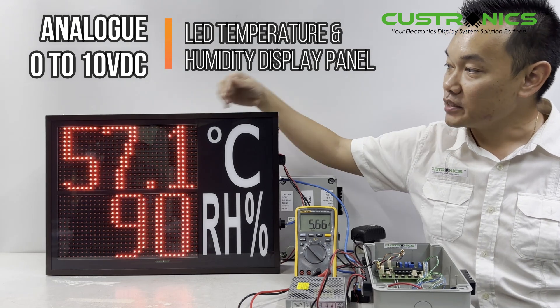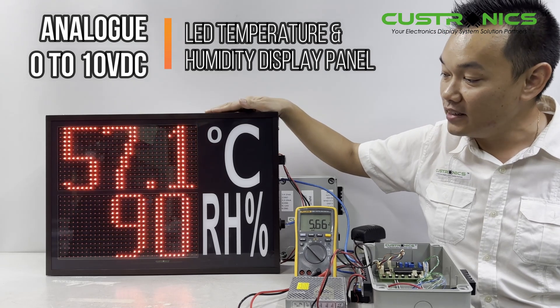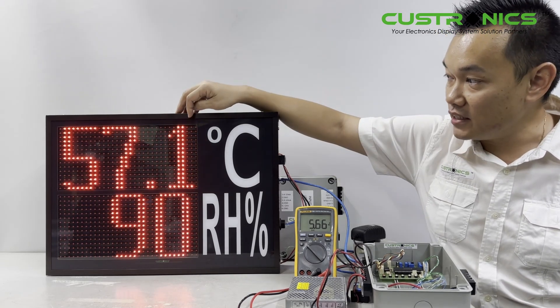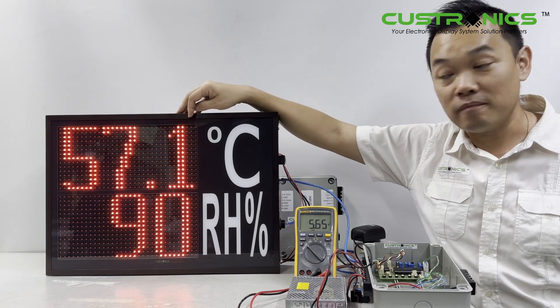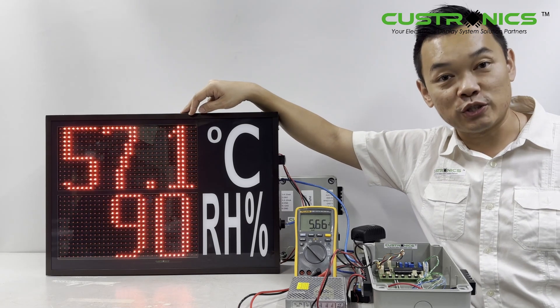You can see the width of the panel is 530 mm and the height is 370 mm. The character height is 150 mm for both displays. So let's start our demonstration today.